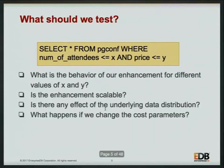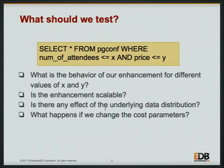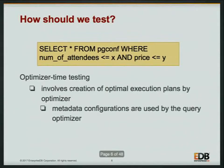Once we develop those operators, what should we test? What is the behavior of our enhancement over different values of X and Y in a given query? If we develop some parallel operator, how will it behave if the selectivity of X and Y is changed? Is the operator going to be scalable over wide data — say, shifting from 1 GB to 1 TB or 100 TB? And what happens if the underlying data distribution or correlation changes, or if we change the cost parameter configuration for the optimizer?